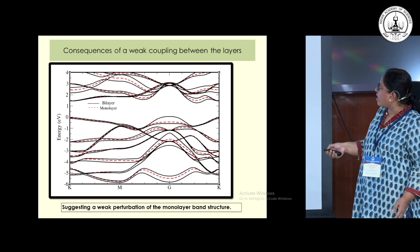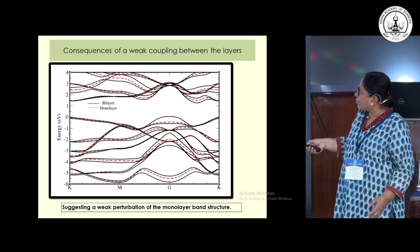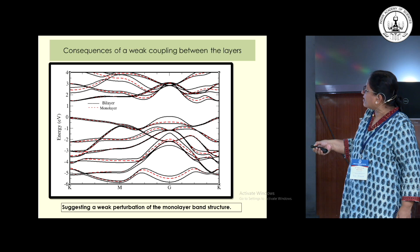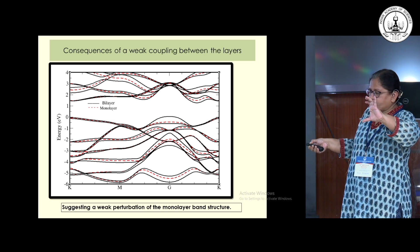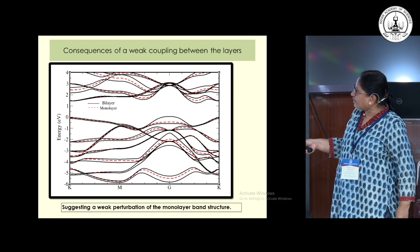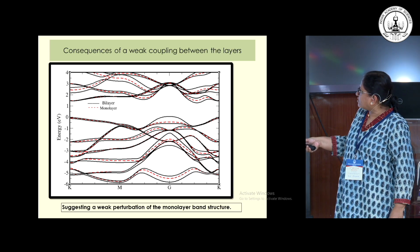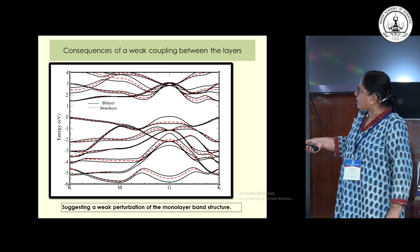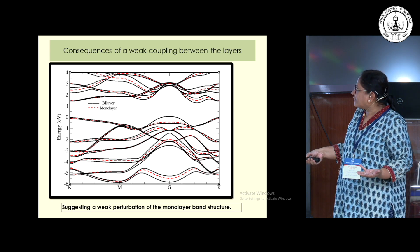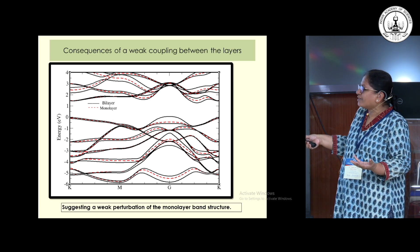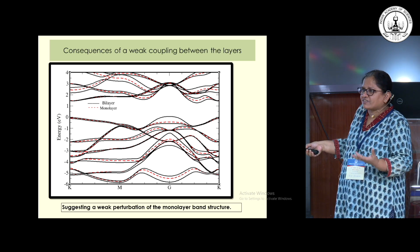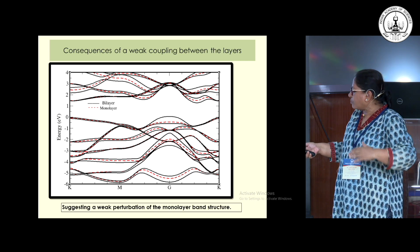Looking at that, what we did was take a monolayer — the energy bands for the monolayer are shown by red dashed lines — and for the bilayer with a regular type of stacking, the band structure is shown in black lines. What you can see is, indeed, there is hardly any perturbation of the energy bands with respect to the monolayer in most regions, with only a strong perturbation in some specific regions. This is exactly what we expect.